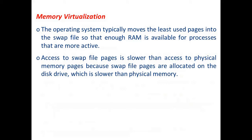The operating system typically moves the least-used pages into the swap file so that enough RAM is available for more active processes. Access to swap file pages is slower than access to physical memory pages because swap file pages are allocated on the disk drive, which is much slower than physical memory.